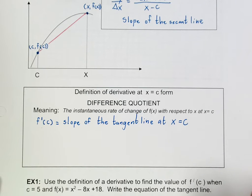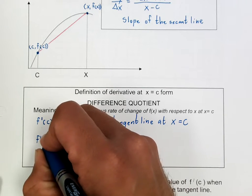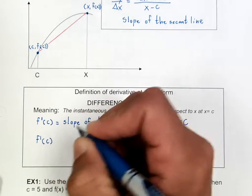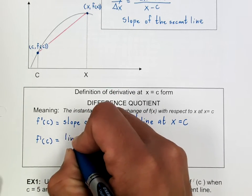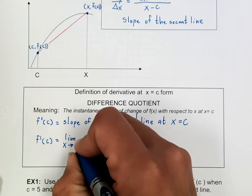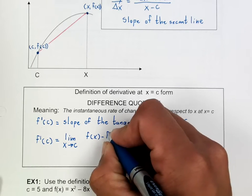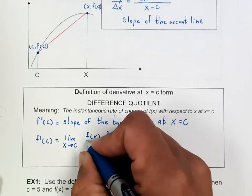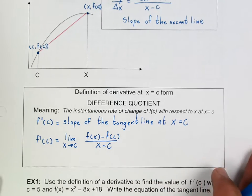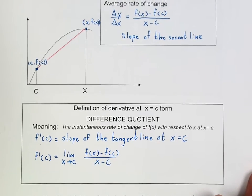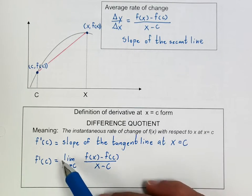So the formula for the derivative, or to find the slope of the tangent line at c, would be equal to the limit as x approaches c of f(x) minus f(c) over x minus c. Please notice that this formula and the formula for the slope of the secant line are almost the same. The only difference is that you have a limit here.